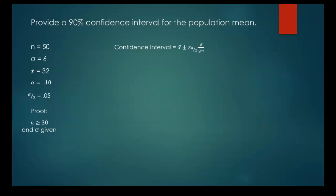So since that proof works out we can now plug in what we know into this confidence interval formula. So our x̄ is 32, our sigma is 6, and our n is 50. So we can definitely plug those in.